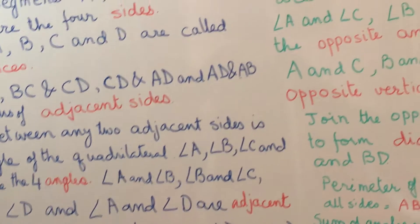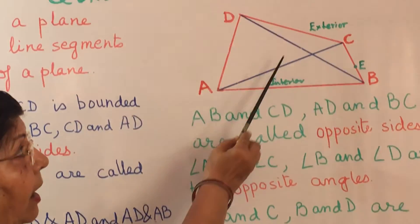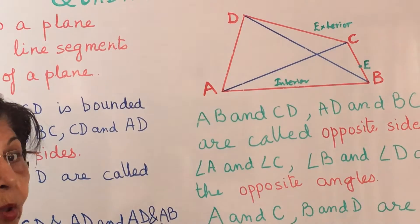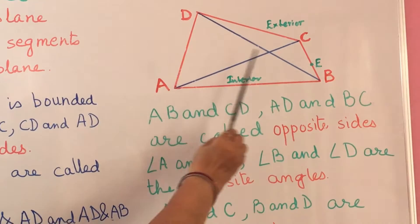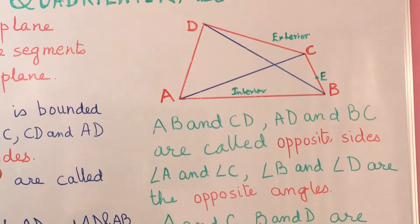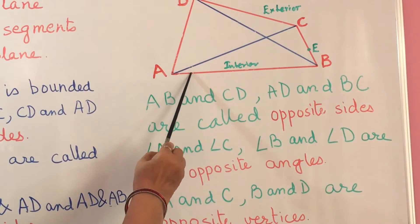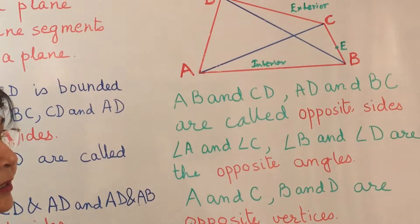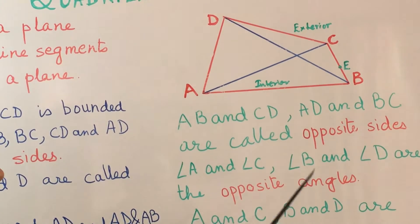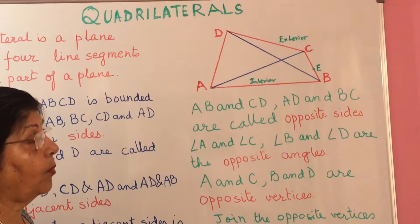Now sides AB and CD are in front of each other, so we call them opposite sides. Similarly, AD and BC are in front of each other, so that is another pair of opposite sides. Angle A and angle C are in front of each other, so they are opposite angles. And angle B and angle D are also opposite to each other, so they are opposite angles.